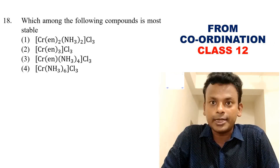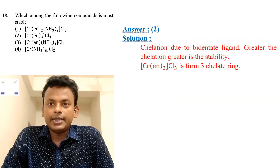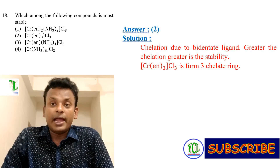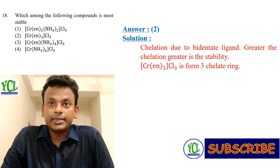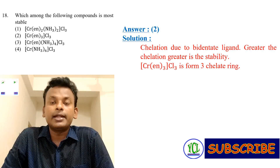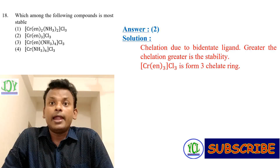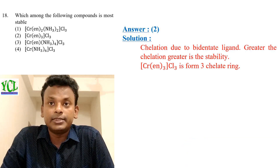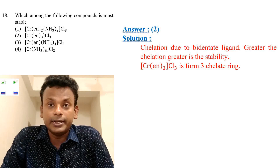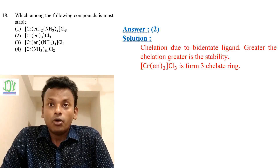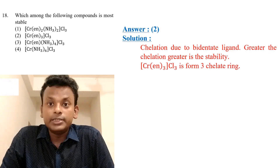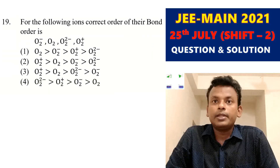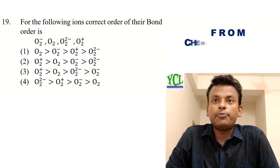Question 18: Which of the following compounds is the most stable? The answer is option 2. Due to chelation by bidentate ligands, greater chelation leads to greater stability. Cr(en)3Cl3 forms three chelate rings, so option 2 is the correct answer. Next, question 19.